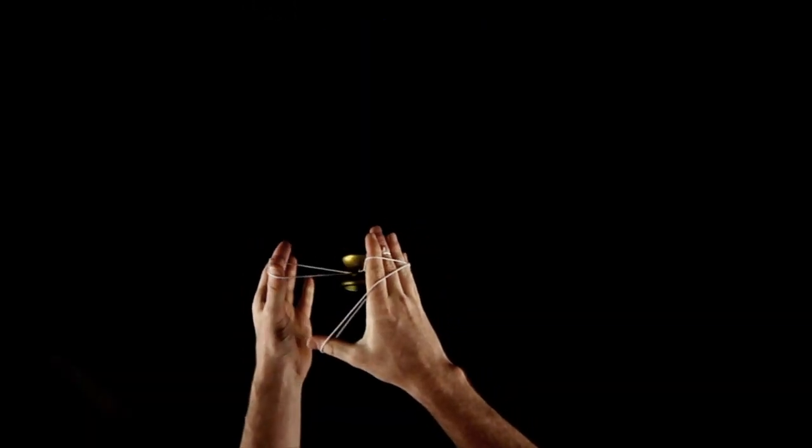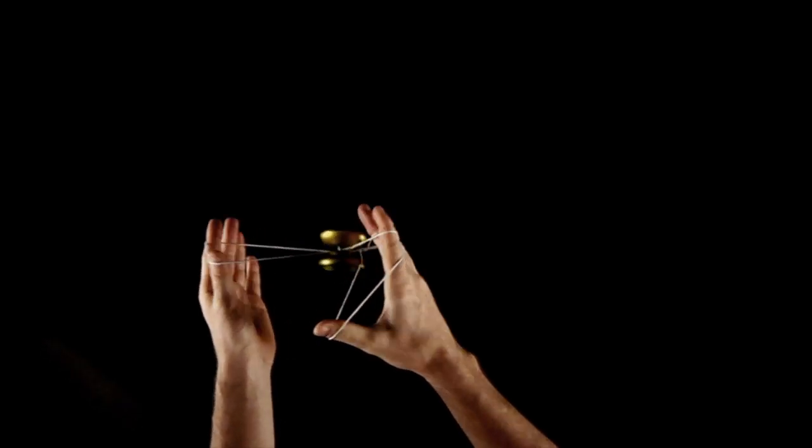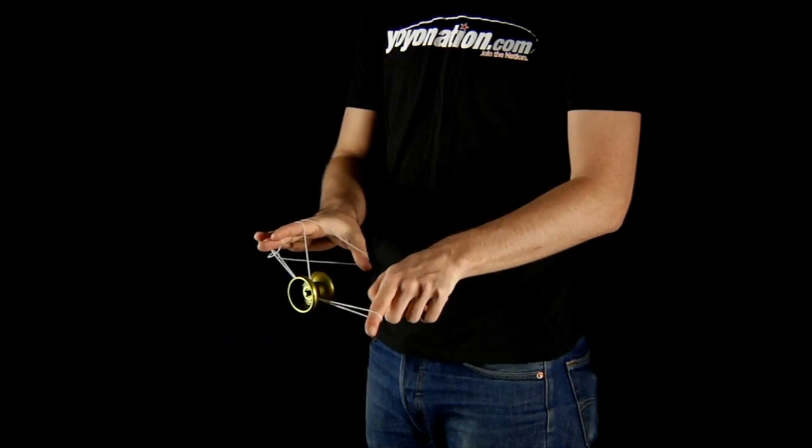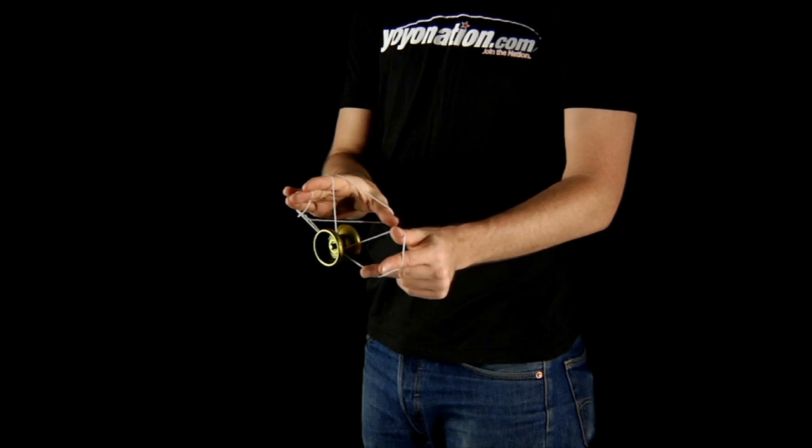Pop the yoyo up and land on the bottom string. It helps to open your non-throwhand to separate the strings.